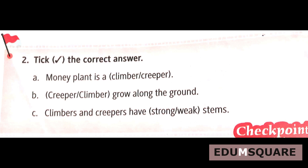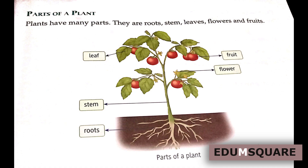Now let's study the parts of a plant. Plants have many parts: roots, stem, leaves, flowers, and fruits. Observe the picture of a plant. Can you name the plant parts? We can see roots, stem, flower, fruit, and leaf. These are the different parts of a plant. Each plant part looks different and plays a different role in the plant.